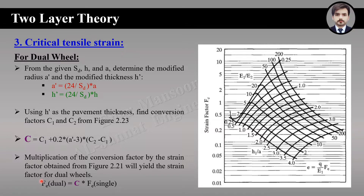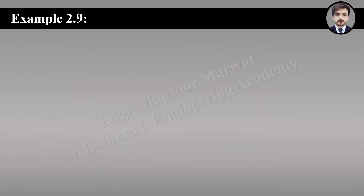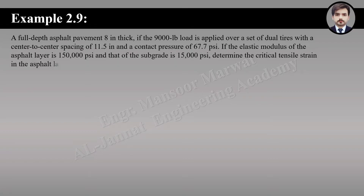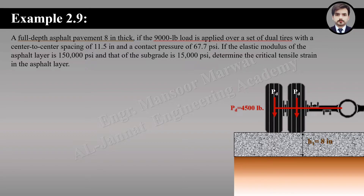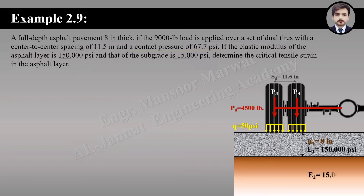Example 2.9: A full depth asphalt pavement 8 inches thick. A 9,000 pound load is applied on a set of dual tires with a center-to-center spacing of 11.5 inches — meaning the load on a single tire is 4,500 pounds — and a contact pressure of 67.7 psi. The elastic modulus of the asphalt layer is 150,000 psi and that of the subgrade is 15,000 psi. Determine the critical tensile strain in the asphalt layer.